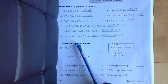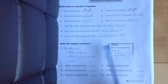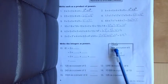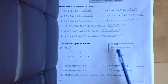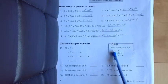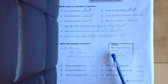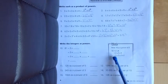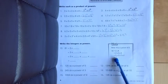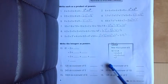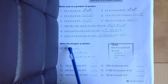Write the integers as powers. Now let's see what the hint says. Write 16 as a power of 2. So 16 equals 2 times 8, equals 2 times 2 times 4, equals 2 times 2 times 2 times 2, equals 2 to the power of 4.